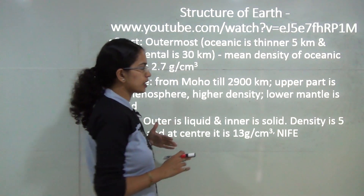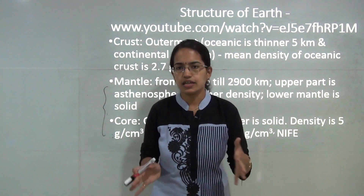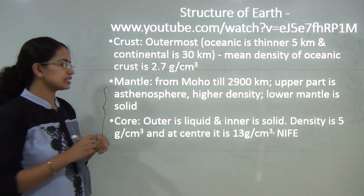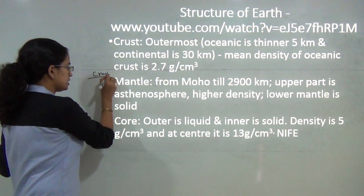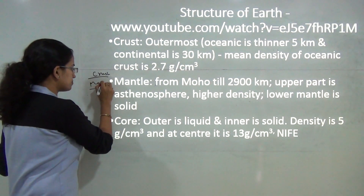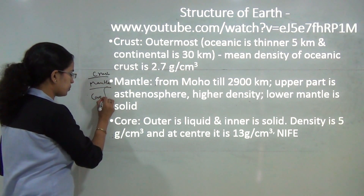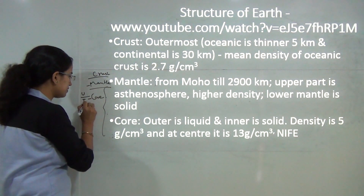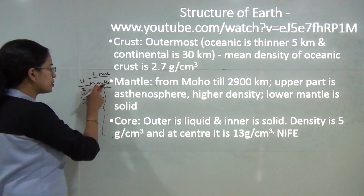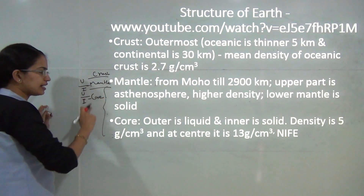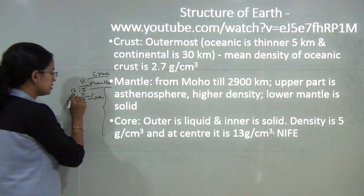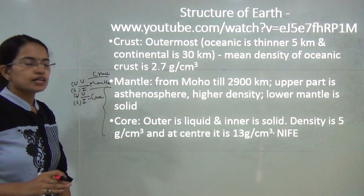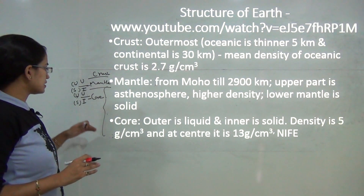The interior of the earth is predominantly classified under three layers: the outermost layer known as the crust, the middle layer known as the mantle, and the center known as the core. Both the core and mantle can be further divided into upper and inner parts. The upper mantle and upper core are liquid, while the inner mantle and inner core are solid.